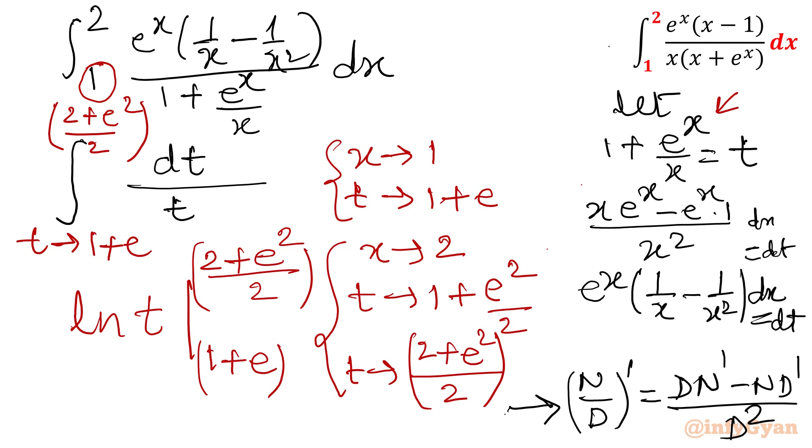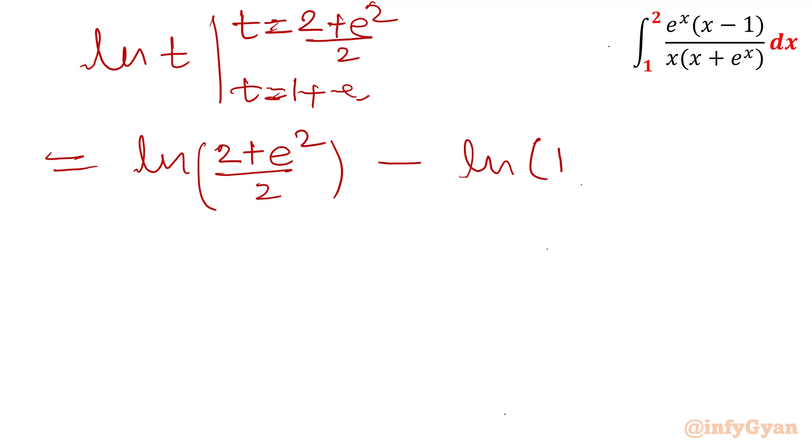Now let us put the value and use some properties of logarithm to find out the correct answer. ln t, 1 plus e, t equal to 2 plus e square over 2. Let us put now. I am putting upper limit. So it will be ln 2 plus e square over 2 minus lower limit ln 1 plus e.